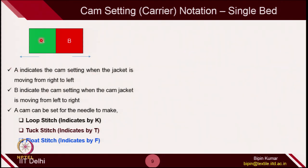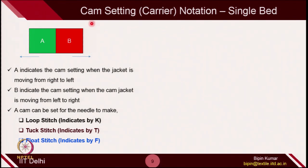A indicates the cam setting when the jacket is moving from right to left; B indicates the cam setting when the cam jacket is moving from left to right. A and B can be set to loop stitch, tuck stitch, and float stitch depending on the user notation. Loop stitch is indicated by K (knitting), tuck stitch by T, and float stitch by F. So when B is K, the cam jacket makes knit stitches; when B is T, it makes tuck stitches; when B is F, it makes float stitches.